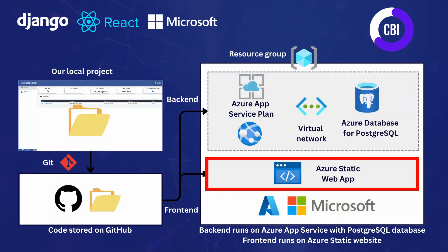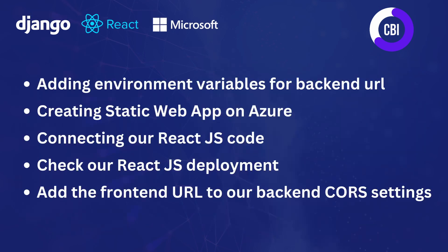If we take a look at the architecture, that covers the bottom part of the image — we're going to bring our code from GitHub to Azure Static Web Apps. We're going to complete our front-end deployment by following five steps: adding environment variables for our back-end URLs used with Axios, creating a Static Web App on Azure, checking the deployment, and making a small change to our back-end code to list the front-end URL inside our CORS allowed origins.